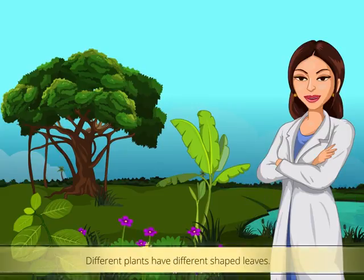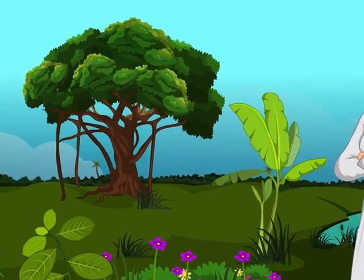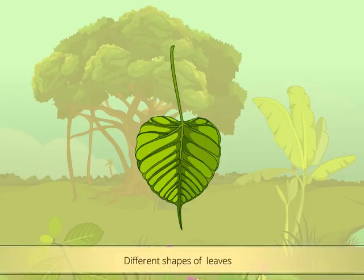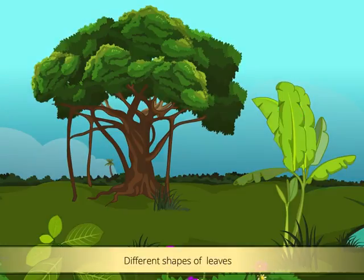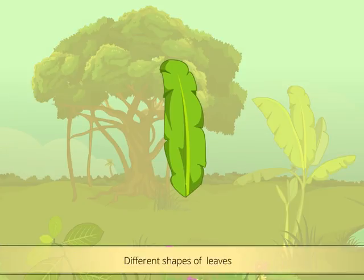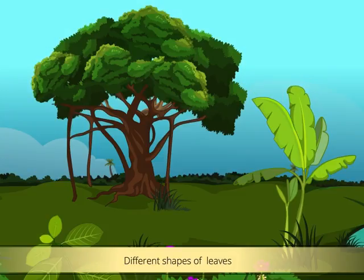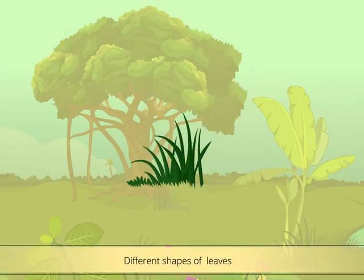Different plants have different shaped leaves. The leaves of a peepal plant have a heart-like shape, whereas the leaves of a banana plant have a long and flat shape. Leaves of grass in a garden have a sword-like pointed shape.